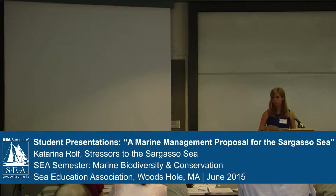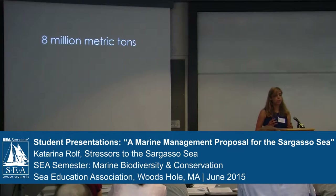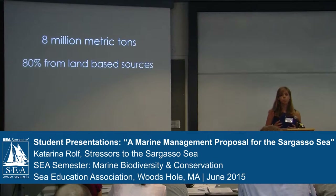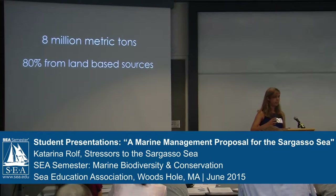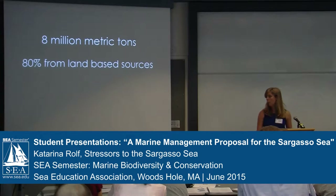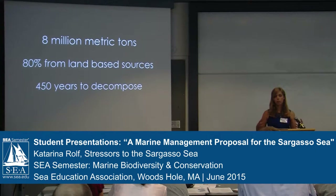Every single year we have 8 million metric tons of plastic entering the global oceans. To put this in perspective, that's roughly the weight of 44,000 blue whales. Currently the blue whale population is somewhere between 9,000 and 20,000 — so we're putting in more plastic every single year than there are currently blue whales left in the oceans. 80% of these plastics are coming from land-based sources — not just fishermen dumping netting at sea, but coming directly from where we are in Woods Hole and as far away as Minnesota. Finally, it takes 450 years for plastics to decompose in the ocean. On a human timescale, they're there permanently.